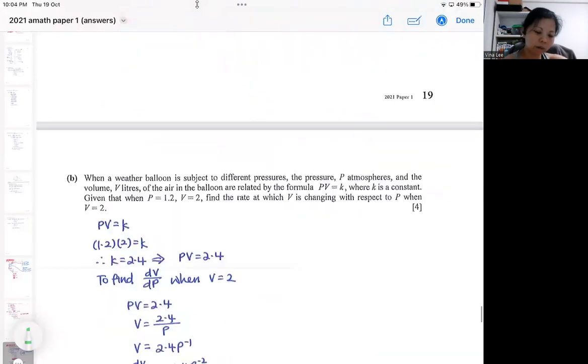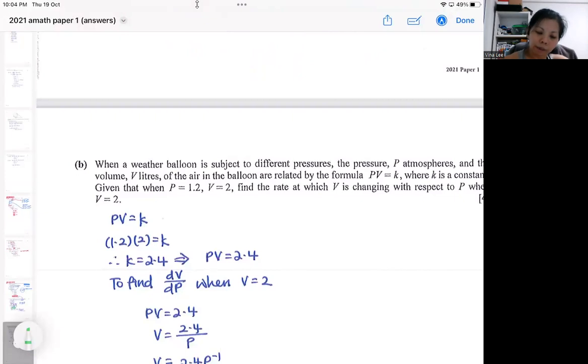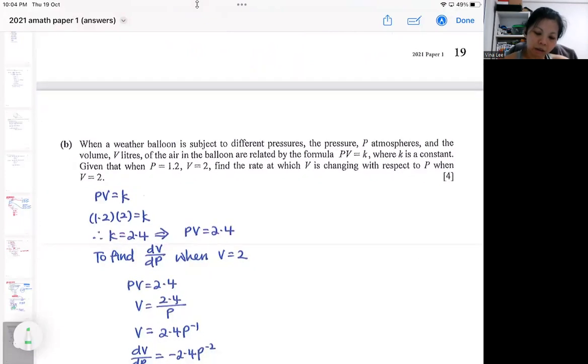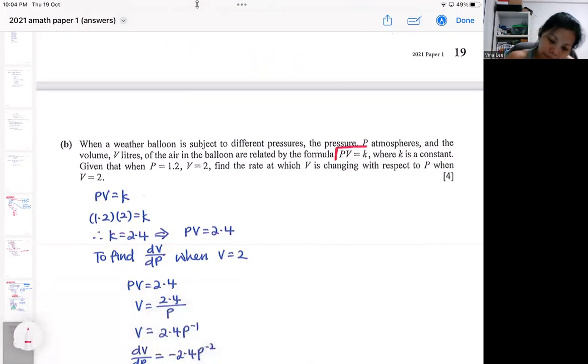The next one is actually not difficult. But what gets people stuck is that they didn't know how to do the differentiation. They actually gave you a formula. They talk about pressure, they talk about volume, and there's the formula. They actually provide you with these two values so that you can find your k. So after you found your k, you actually got a complete formula.